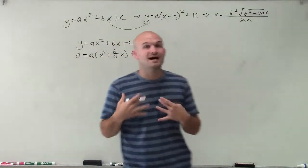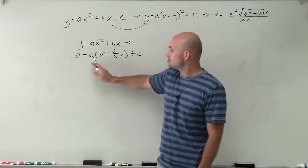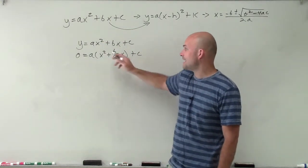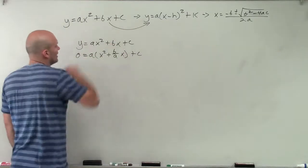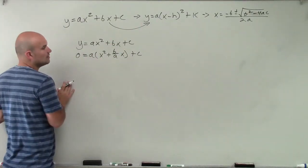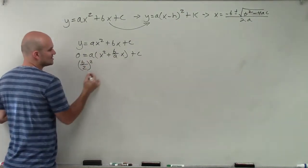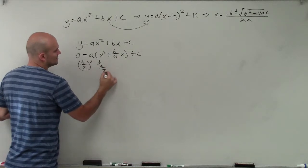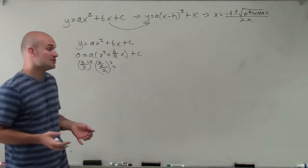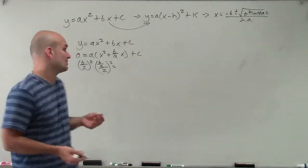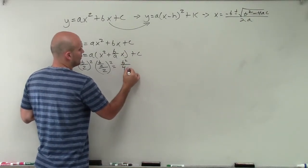There are a couple of different ways to do this. I like to factor out the a from the first two terms. We can always check our work by applying the distributive property to make sure we get the same answer back. Now we need to do b divided by 2 and squared. In this case, our b is b over a, so b over a divided by 2 is b over 2a, and squared gives us b squared over 4a squared.